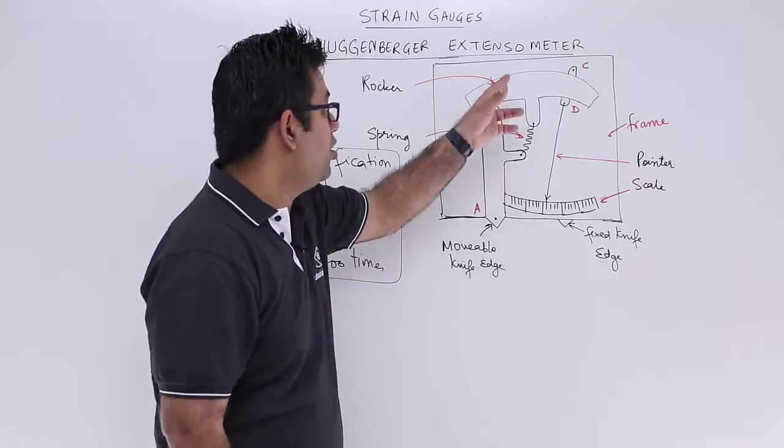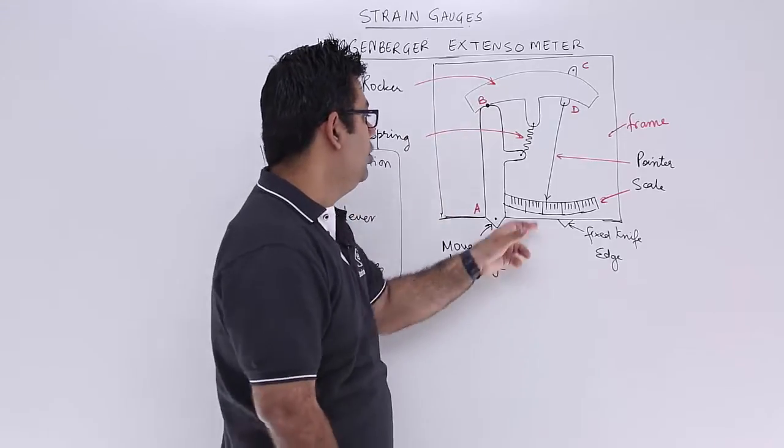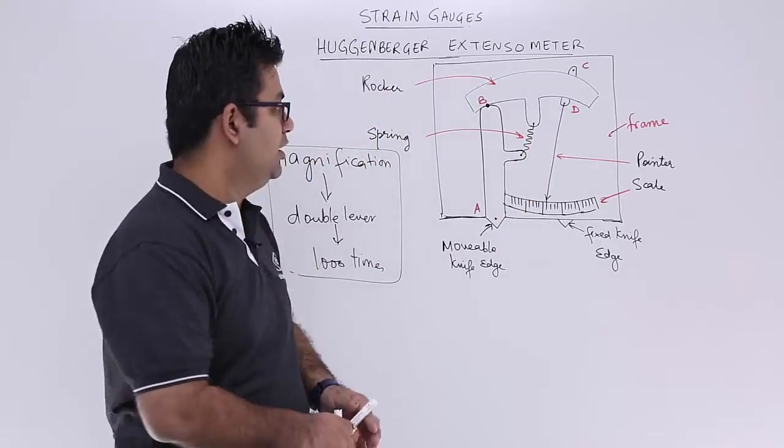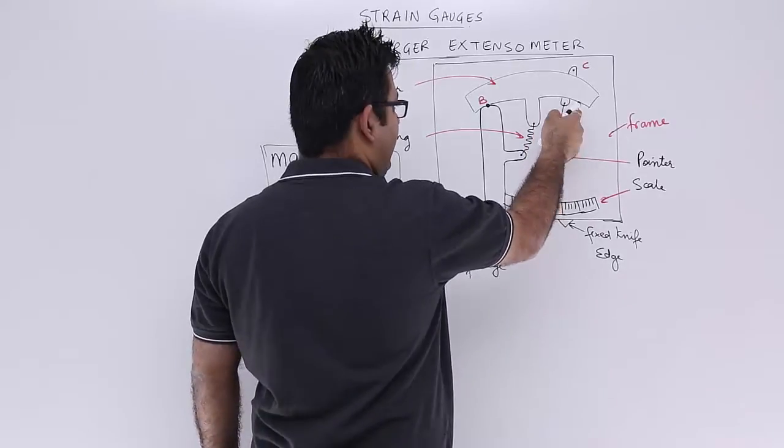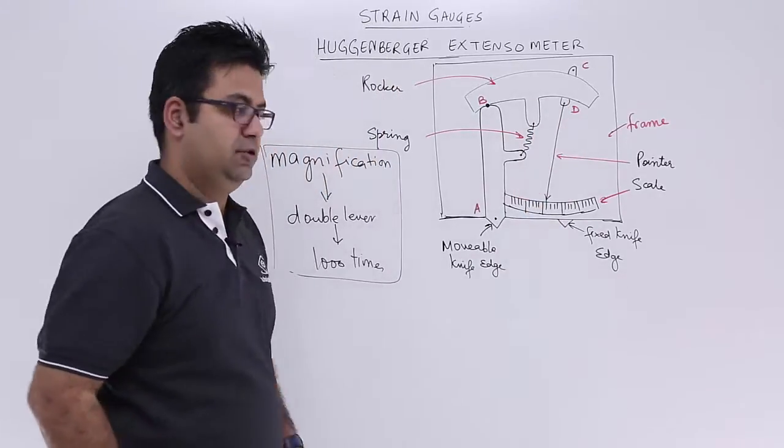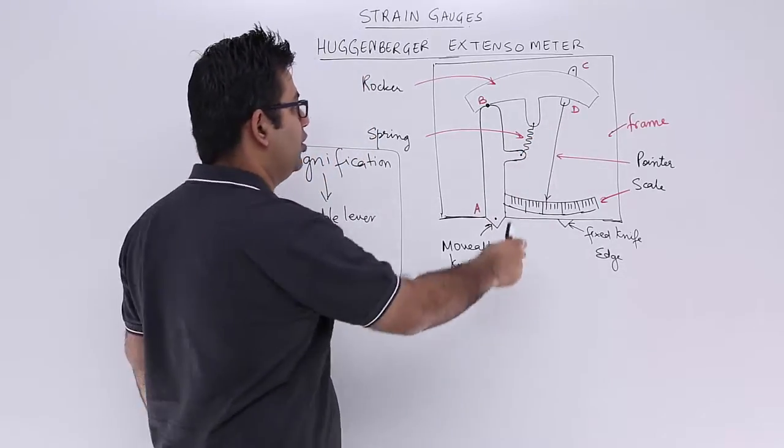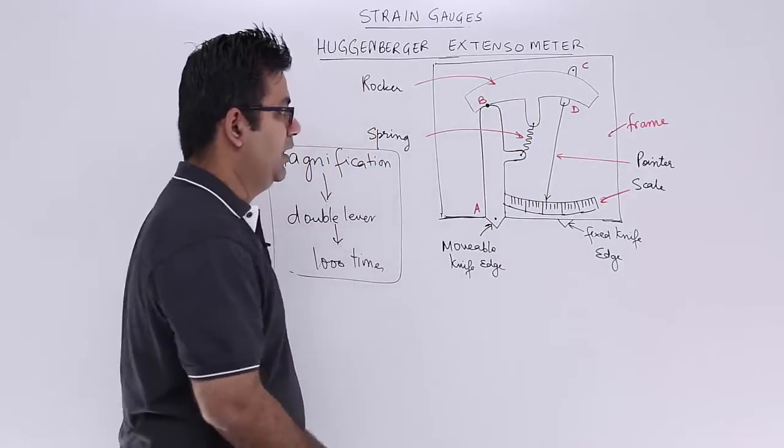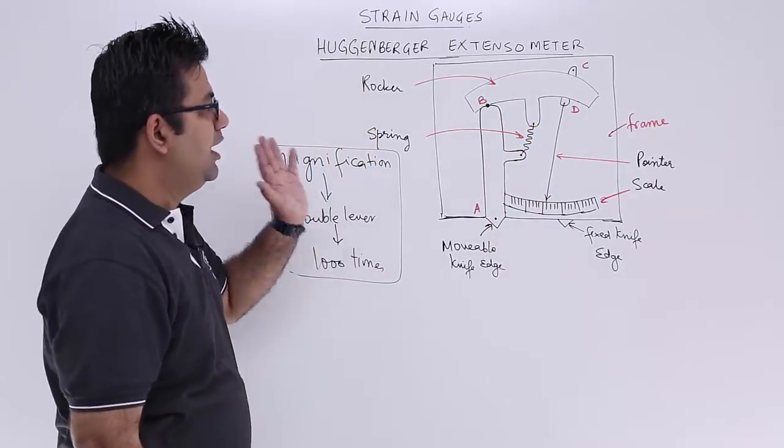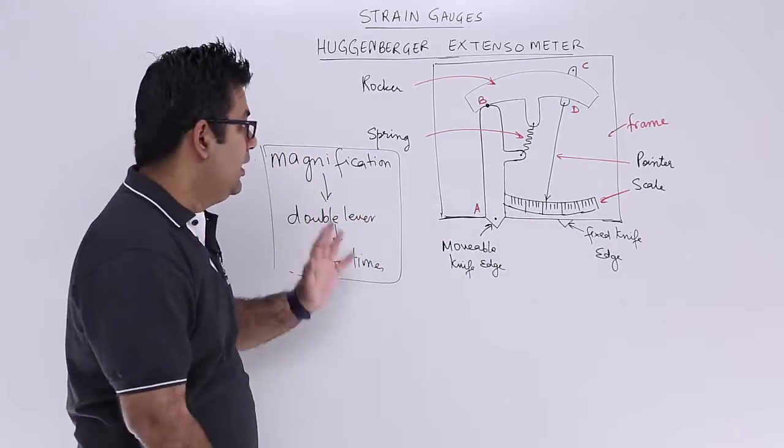And basically this rocker is transmitting this movement from the knife edge onto the pointer. So this pointer is at point D and D is a point on the rocker. So this is how this pointer will move. And this rocker is kept in its position with the help of the spring. So this is pretty much how this entire extensometer looks like and functions.